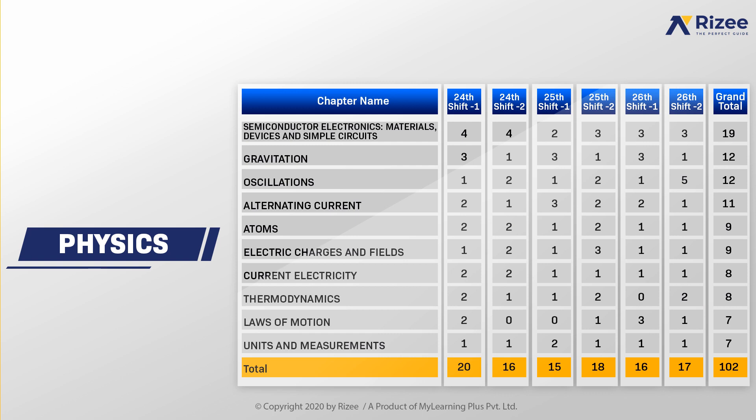If you see gravitation, at least 1 to 3 questions came from each shift. You need to focus on these chapters and prepare well for the next upcoming JEE Mains March exam.